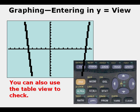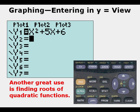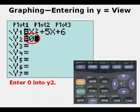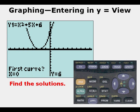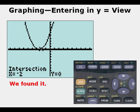Another great use of graphing is finding roots of quadratic functions. Set Y2 equal to 0 and make it a thick line by going to the far left. This will appear on the x-axis. We can find the solutions by pressing 2nd, Trace, 5, 1, 5, Enter, Enter, Enter, Enter. We find one solution: x equals negative 2, y equals 0.